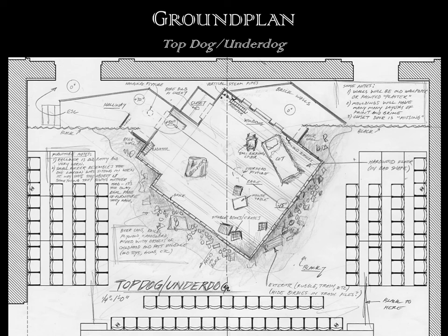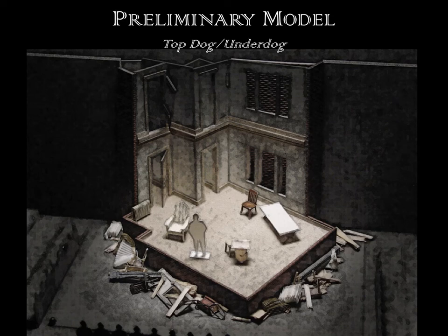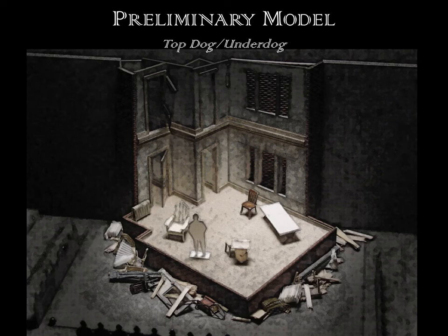And here is a three-dimensional model of that same set we just saw in the ground plan. You can see how both of these renderings express something different. This is actually a 3D thing — you can see the little person standing on stage, the cot, the chair, the other chair, and the junk around the edges. This three-dimensional model is painted exactly like the set will be painted. So this communicates a tremendous amount of information to the directors, to the actors themselves, and even to people in the scene shop — how to paint it, what colors to use, where should it be darker or lighter.